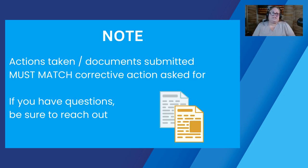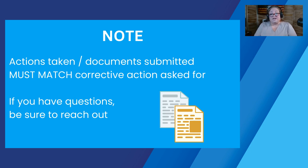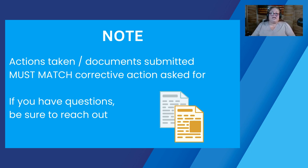One of the issues we see in responses is that the actions taken or the documents submitted don't clearly match the exact corrective action needed. So if we say there needs to be a corrected AR, what you need to do is correct that AR, submit it through TRAX, and then attach that signed corrected AR. Make sure that the documents you're attaching and the actions you go through match the corrective action that we've asked you for.